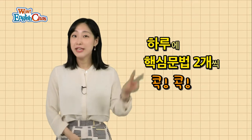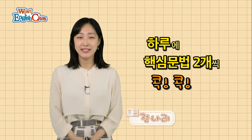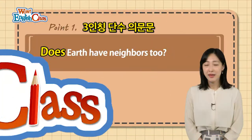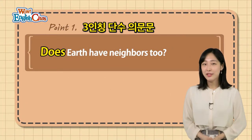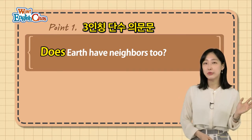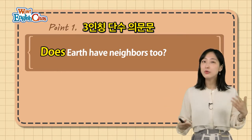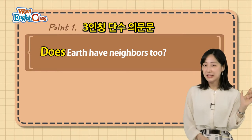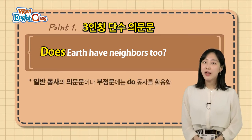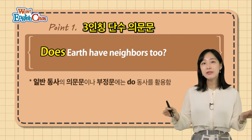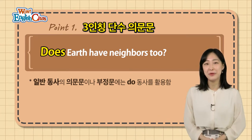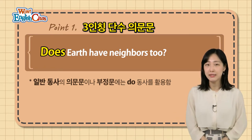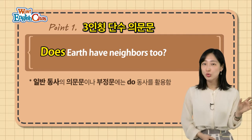Hi, everyone. 하루의 핵심문법 두 개씩 콕콕 집어주는 Grammar 클라스의 전나리 선생입니다. 자, 오늘의 첫 번째 Grammar 포인트는 3인칭 단수 의문문입니다. 예문부터 보도록 할까요? Does earth have neighbors too? 여기에서 주어는 earth, 우리가 살고 있는 지구인데요. 지구는, 역시나 또한 이웃들을 가지고 있을까요? 이때 does earth라는 부분에 이 does가 오늘의 핵심 표현이 되겠습니다. 영어에서는 비동사를 제외한 일반적인 동사들을 일반 동사라고 부르는데요. 이 일반 동사가 들어간 문장을 의문문이나 부정문으로 만들 때에는 do 혹은 does를 활용하게 됩니다.